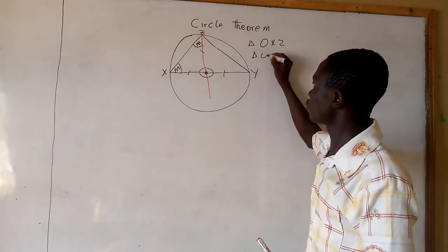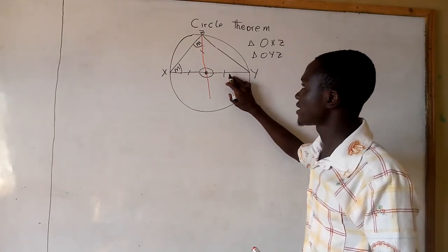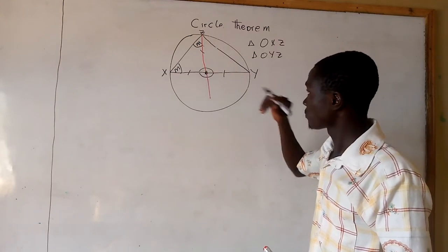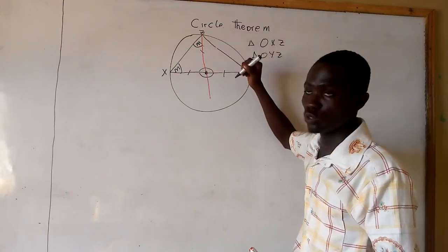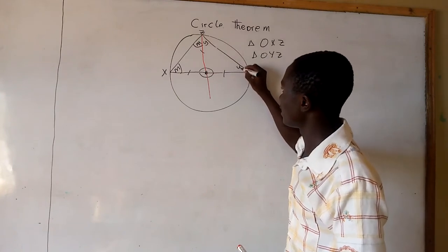Again, triangle OYZ is also isosceles, since two sides are equal. So here, the base angles are also the same. Let us name here angle Y and here too angle Y.